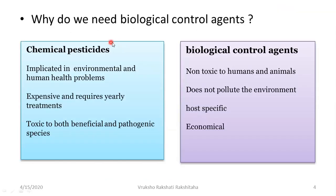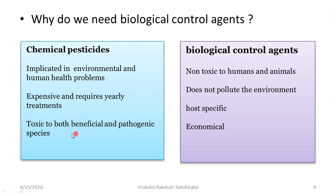Why do we need biological control agents? Let us compare with chemicals. Chemical pesticides are implicated in environmental and human health problems. When farmers use chemical pesticides on their farm, it causes environmental pollution and human health problems. They are also very expensive and have to be applied every time. Furthermore, chemical pesticides are toxic to both beneficial as well as pathogenic species.